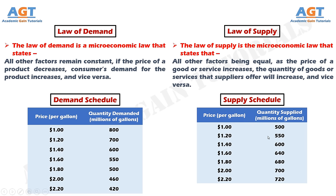According to the law of supply, as the price increases, the supply increases from the supplier's end, and as the price decreases, the supply also decreases from the supplier's end.